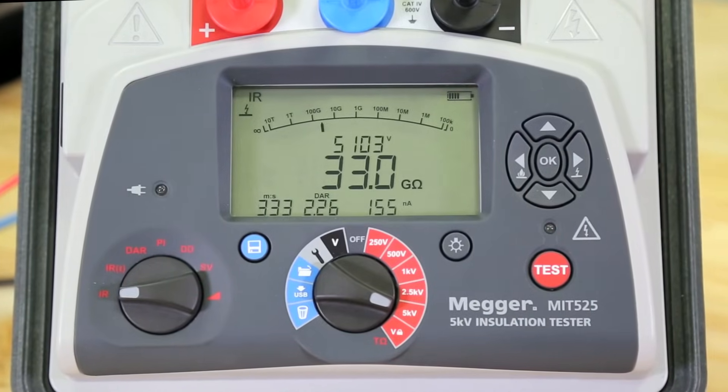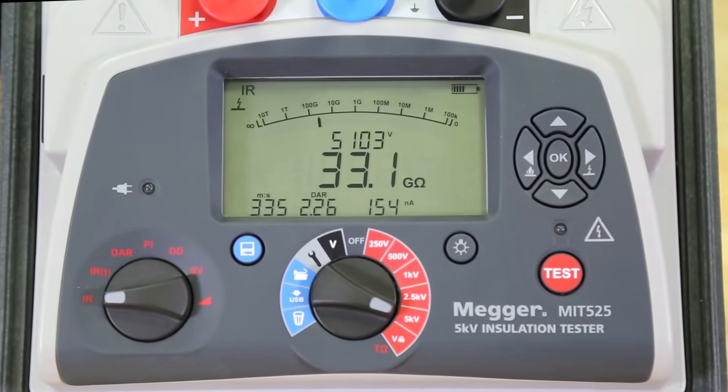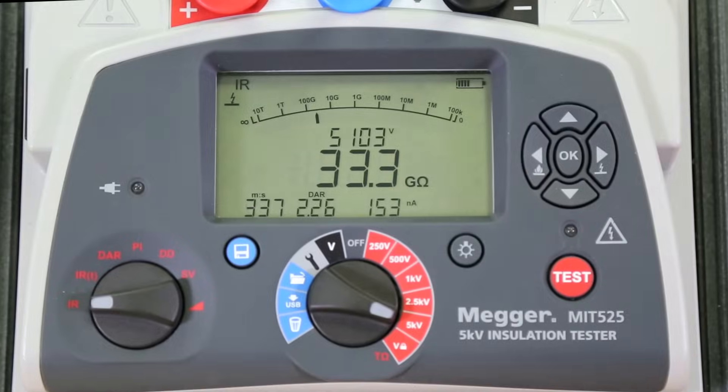The MIT range gives 5% accuracy to at least 1 teraohm, the sort of value expected in substations.